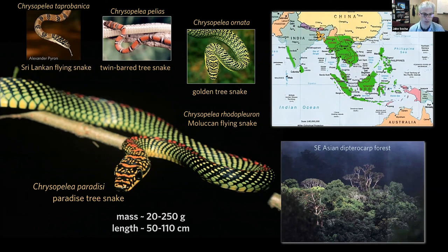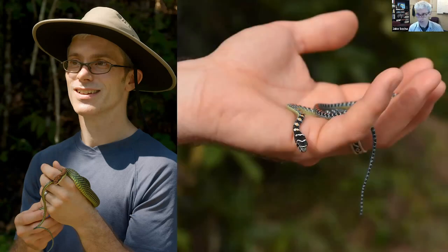How big are they? This looks like a big snake, but in reality it fits in my hand. They're about a couple of feet long at max. The best gliders are about as wide as my finger. Even small ones can glide — here you can see a hatchling flying snake that's really tiny, about two grams, and even those little ones can glide.